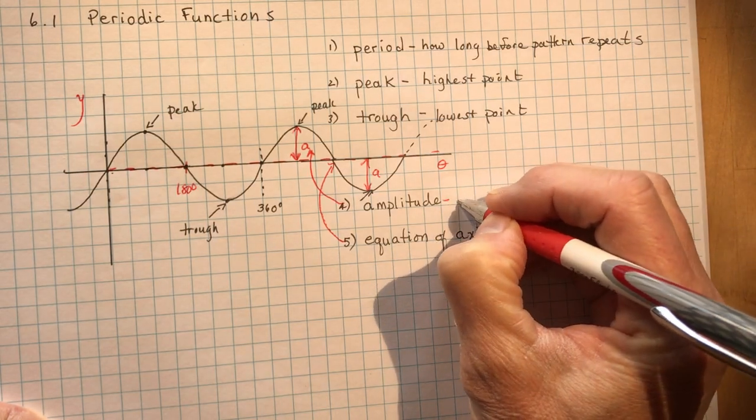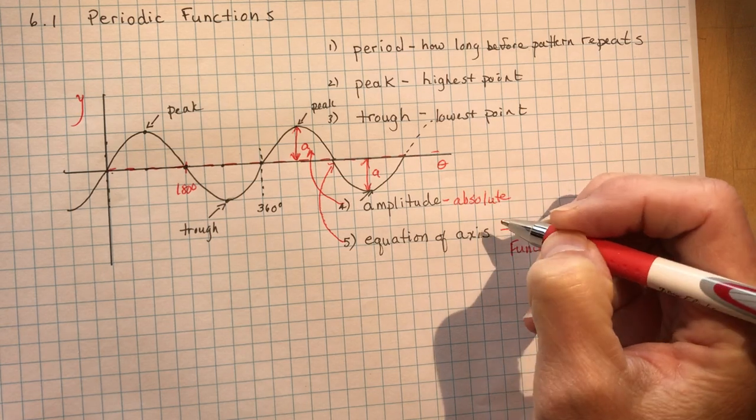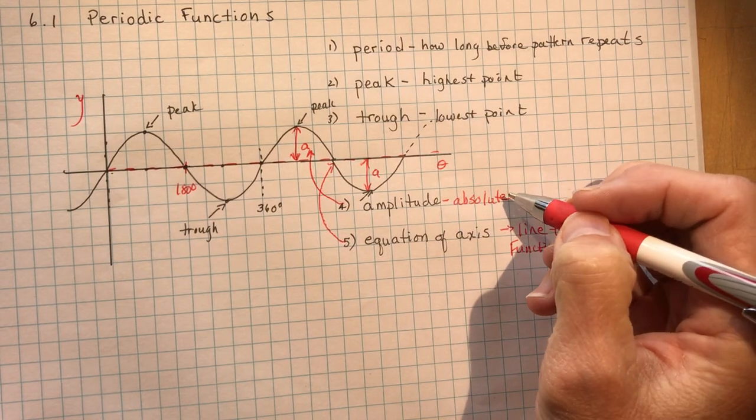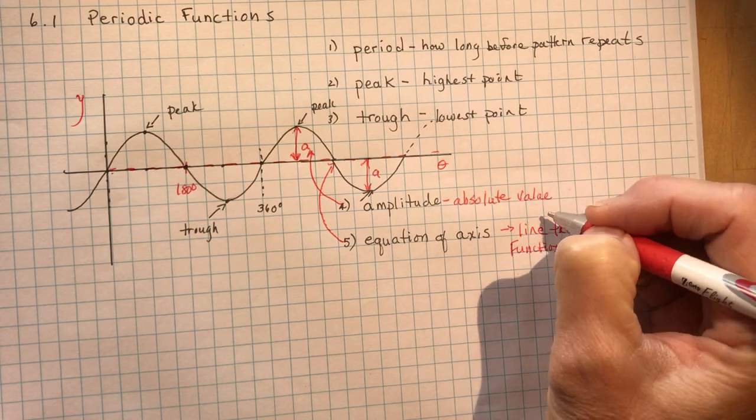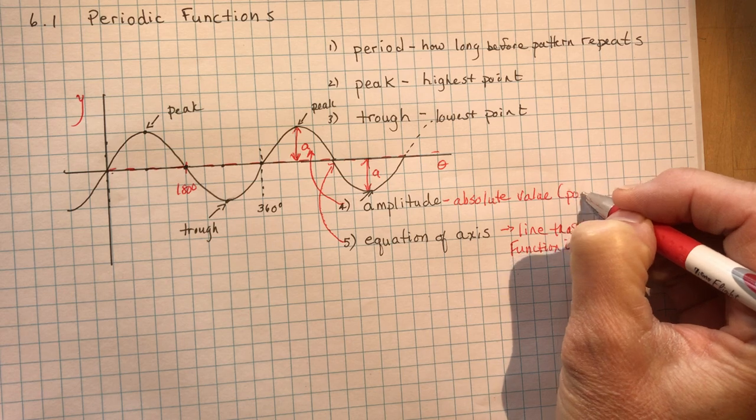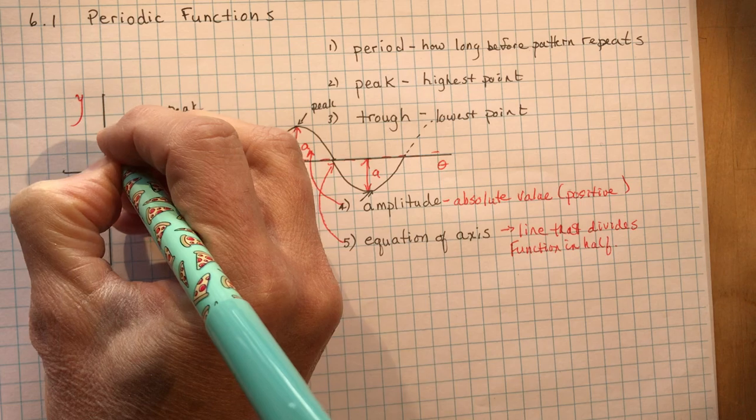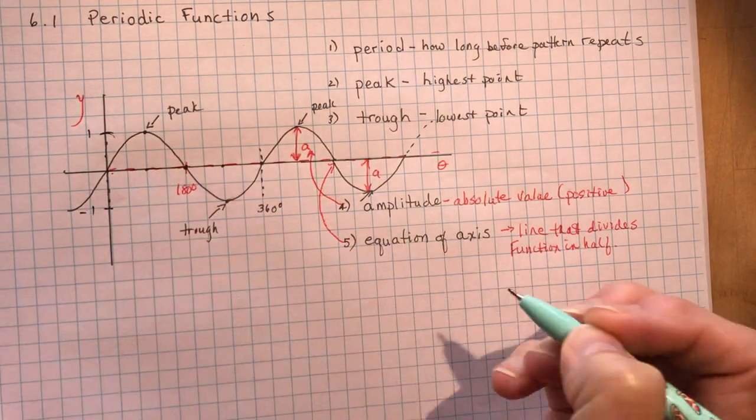And it is an absolute value. So you wouldn't say the amplitude is minus one. No, the amplitude is one. So it's an absolute value. That means a positive value. You don't say negative amplitude.